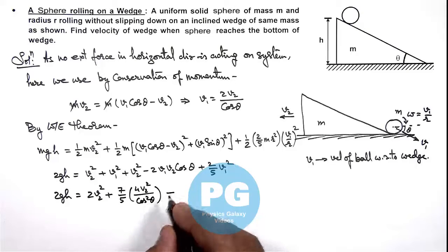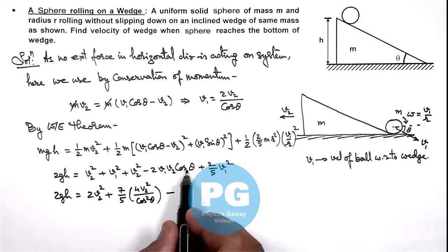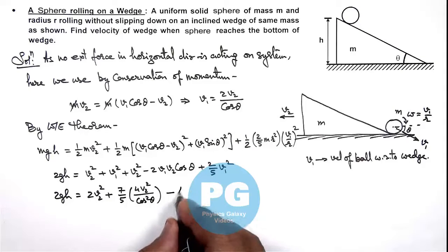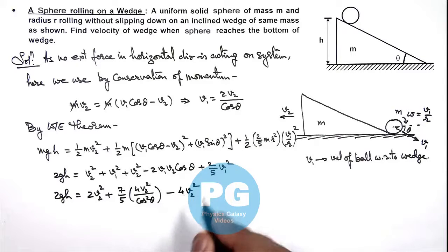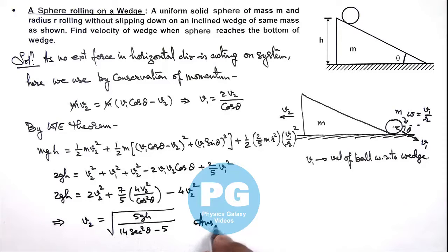And minus here we can write v1 cos theta is equal to 2v2, so this becomes 4v2 square. Further on simplifying this relation we get the value of v2 is equal to under the root of 5gh divided by 14 sec square theta minus 5. That is the result of this problem.